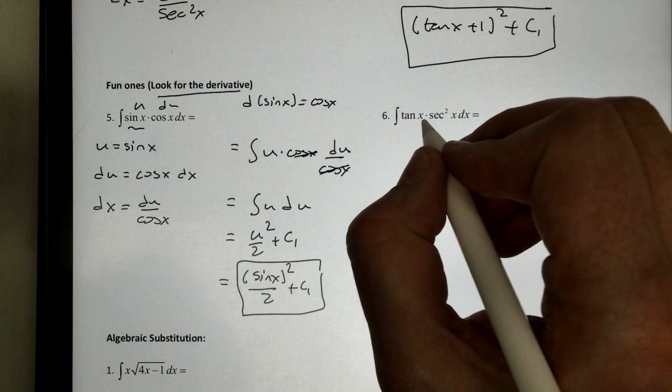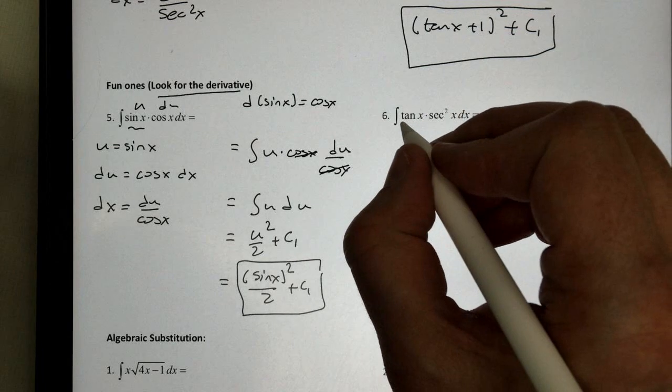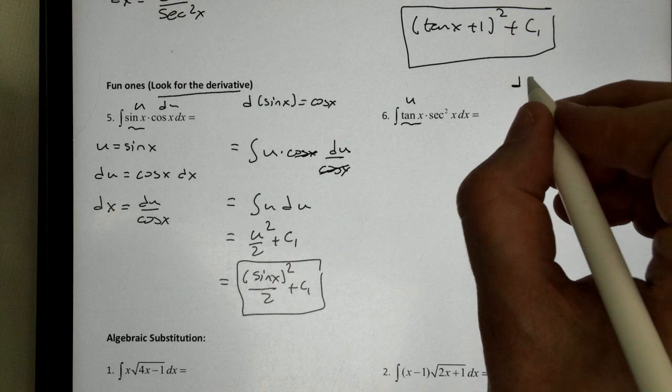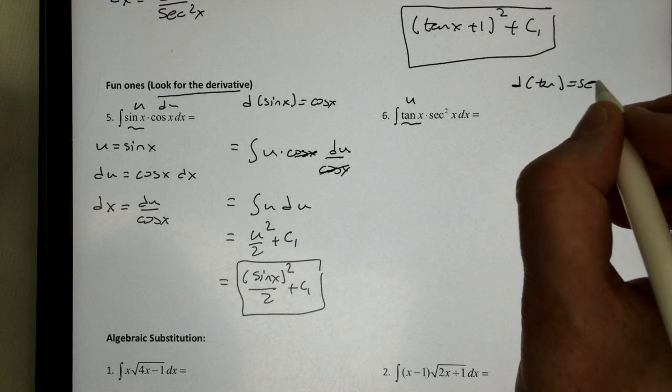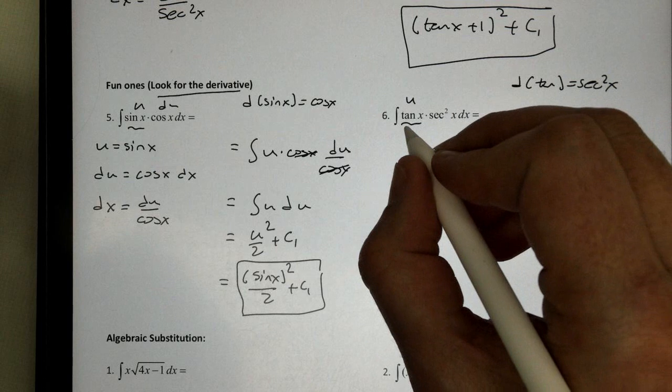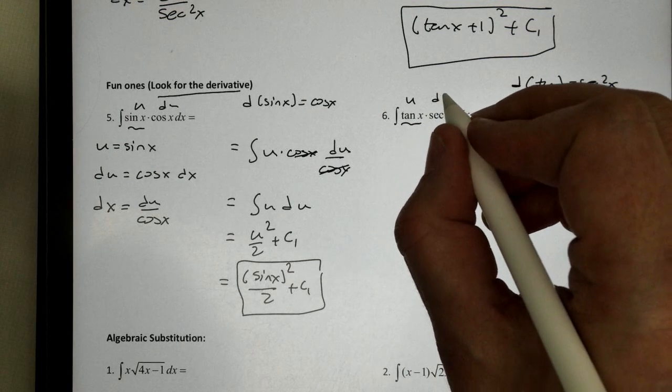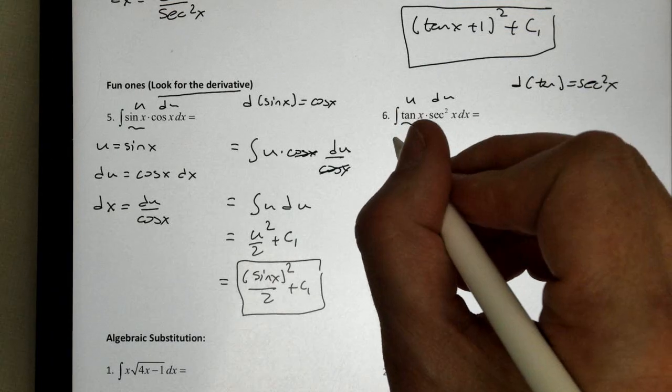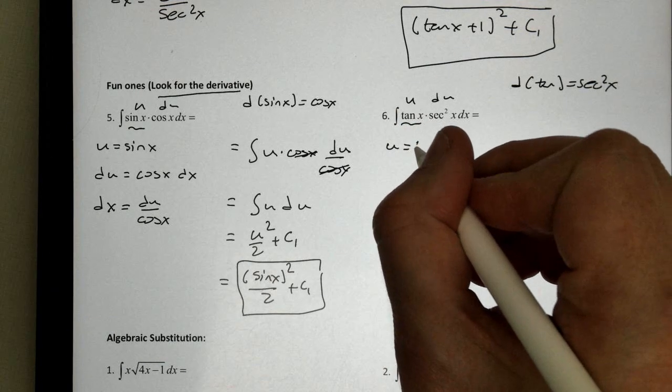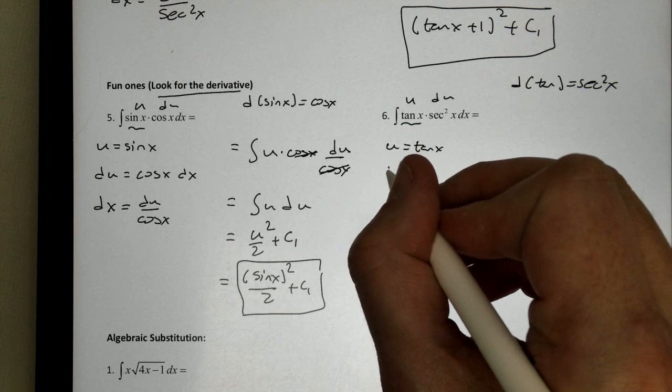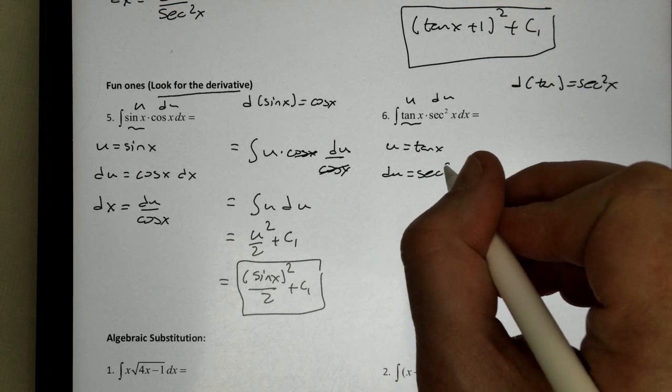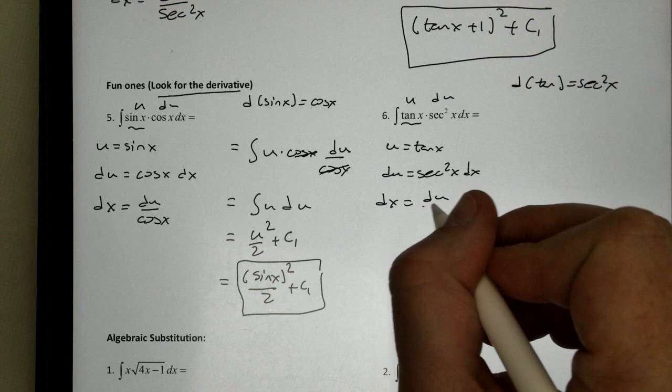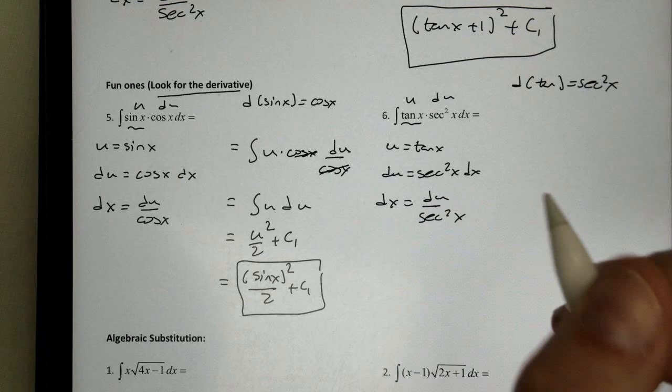If I look at this one, it doesn't look like u-substitution. But if I look carefully, I know that the derivative of tangent is secant squared of x. So if I let tangent be u, its derivative is secant squared. So I'm going to go ahead and do that. u is tangent of x. du becomes secant squared of x dx. dx becomes du over secant squared of x.